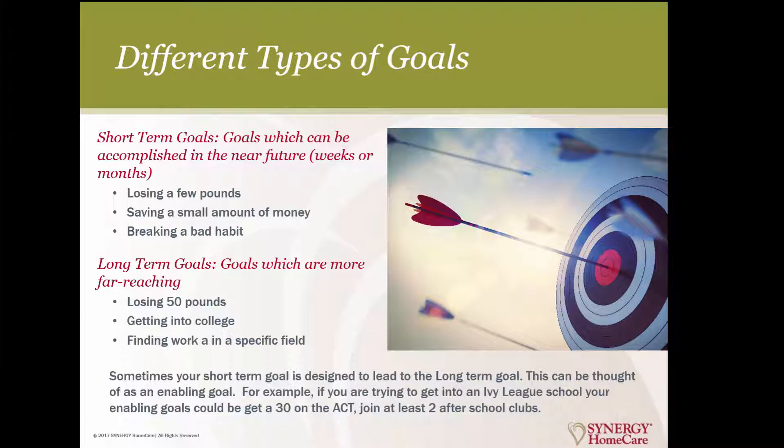An enabling goal is really a short-term goal that becomes your bridge to the long-term. For example, if you're trying to get into an Ivy League school, your enabling goals would be getting a 30 on the ACT, joining at least two after-school clubs, and probably doing two to five hours of homework each night. So there are short-term goals that are often tied and connected to a long-term goal. Or sometimes short-term goals just live on their own, and once they're completed, they do nothing else but get you to that end result.